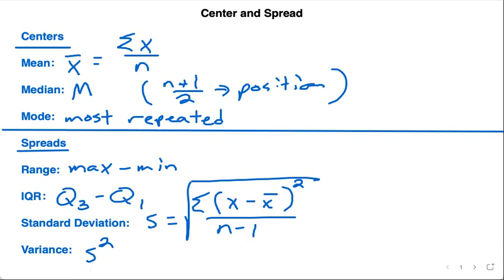You might be asked what affects the centers and the spreads. You might hear something about either being sensitive or resistant. Sensitive means that if I add an outlier, it's going to completely change the actual answer.